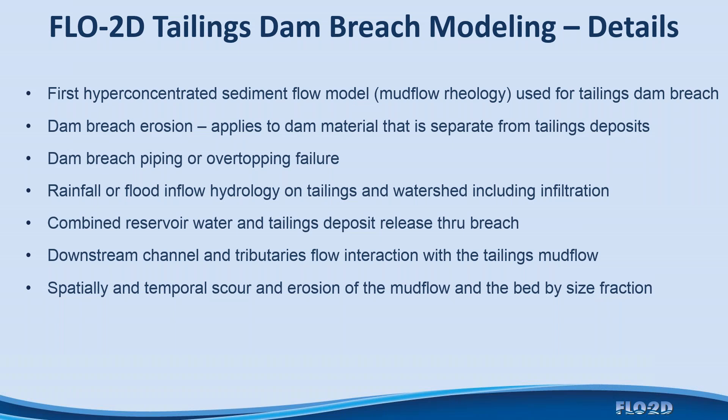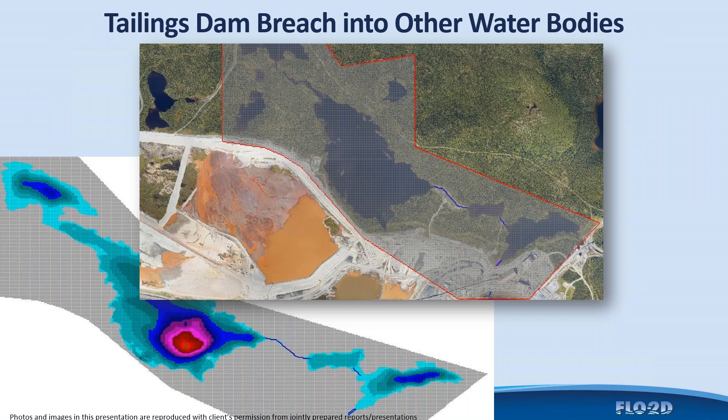You can have rainfall and flood inflow to the tailings, and the watershed can include infiltration of water on the tailings. There can be combined reservoir or tailings water over the tailings deposit, which can also be released through the breach in two-phase flow. Downstream channel and tributary flow interaction with the tailings mudflow is supported, along with prediction of scour and deposition on the bed, final cessation of the mudflow, and all of this can be done by size fraction. The tailings dam can also be breached into other downstream reservoirs or tailings dams, simulating a cascading series of failure events.